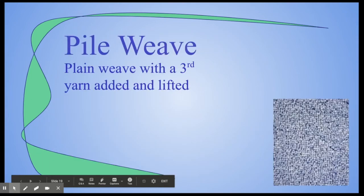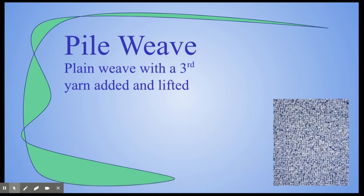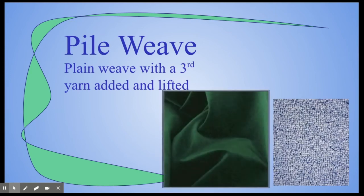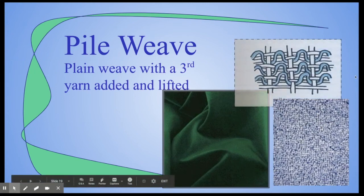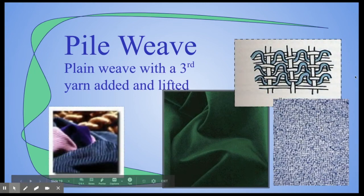You could even do a pile weave. This is kind of like carpet — you do a normal plain weave and then add a third yarn that's lifted so it sticks up out of the fabric. This is more like velvet.